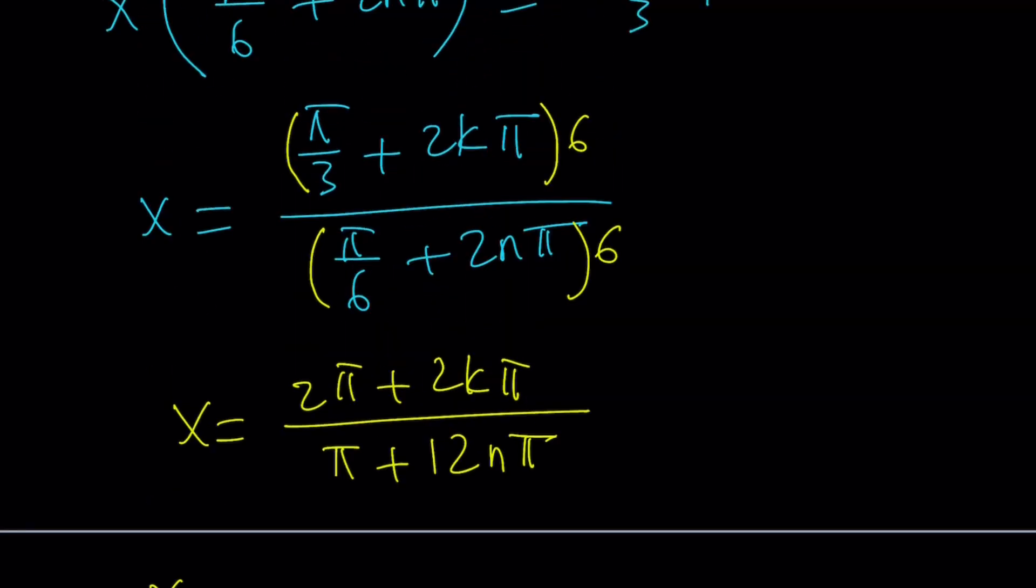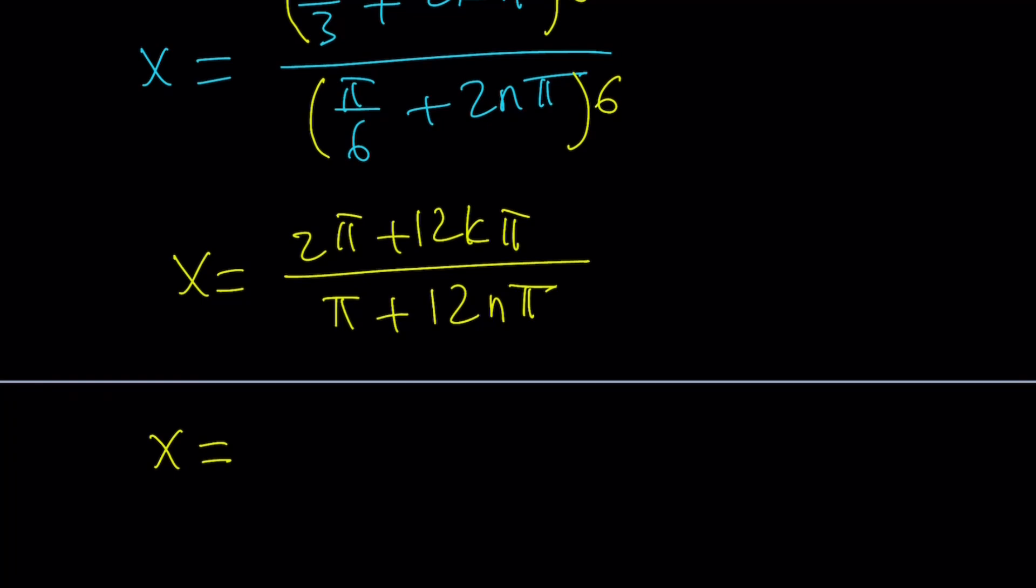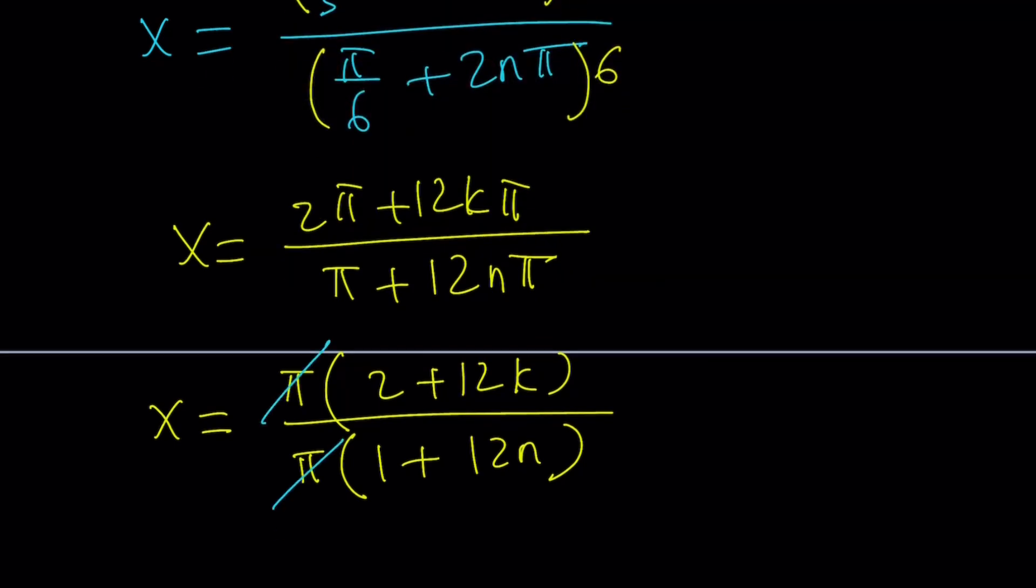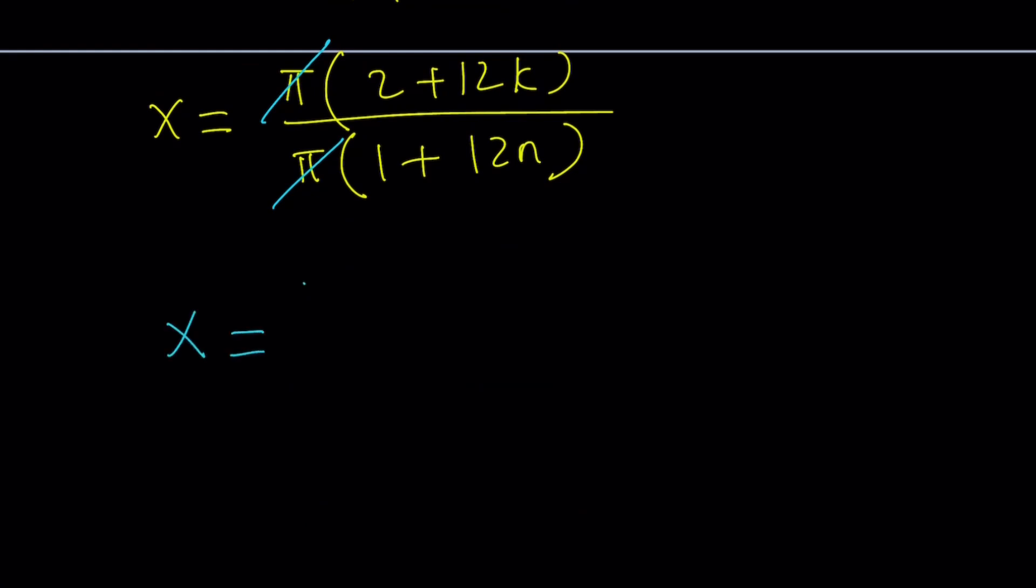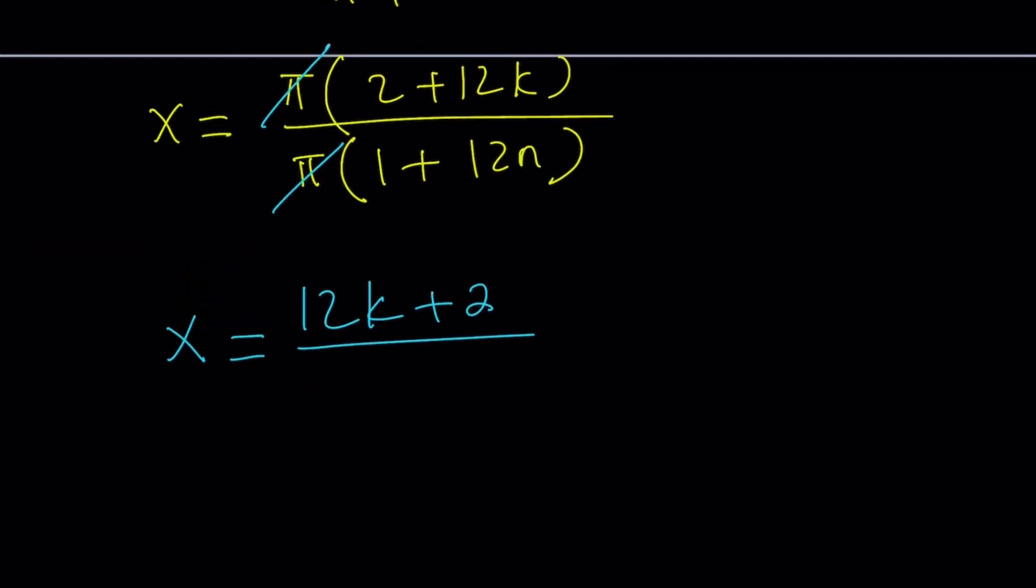I hope I didn't mess up anything. Oh yes, this is supposed to be a 12kπ. I'm sorry. I'm like, what is going on? This shouldn't be a 2k. So now, if we go ahead and take out a π, I think it's better to take out a π. And then we're going to get (2 + 12k) / π(1 + 12n). I'm going to write it in a nicer form in a little bit. The π cancels out as well, leaving us with something very, very interesting. Let's go ahead and write it like this: (12k + 2) / (12n + 1).